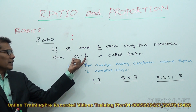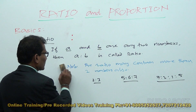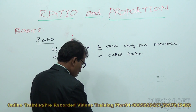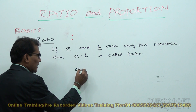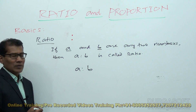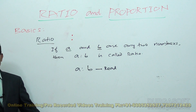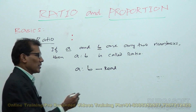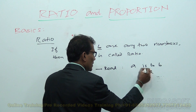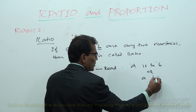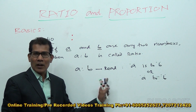Now let us look especially at A is to B. There are many basic concepts in a two-number ratio. This is the structure of a ratio. Usually we read it as 'A is to B.' The same thing can also be read as 'A to B.' In ratio, both 'A is to B' and 'A to B' are the same — don't get confused.